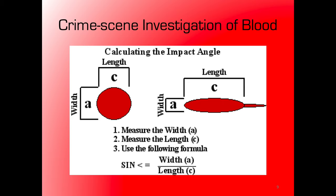By running a relatively simple calculation using the width and length of a blood droplet, you can determine an angle, then run that angle off the droplet as a string to a location in space. When all those strings meet at one spot, that shows you in three dimensions — not just where in the room, but how far above the floor the bloodletting occurred. A simple Google search will give you lots of information on this.